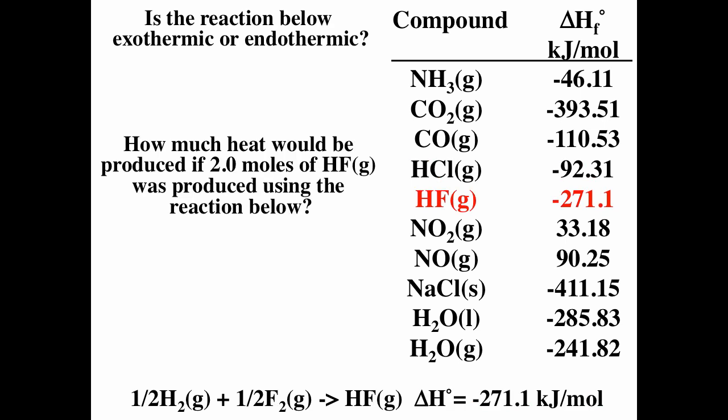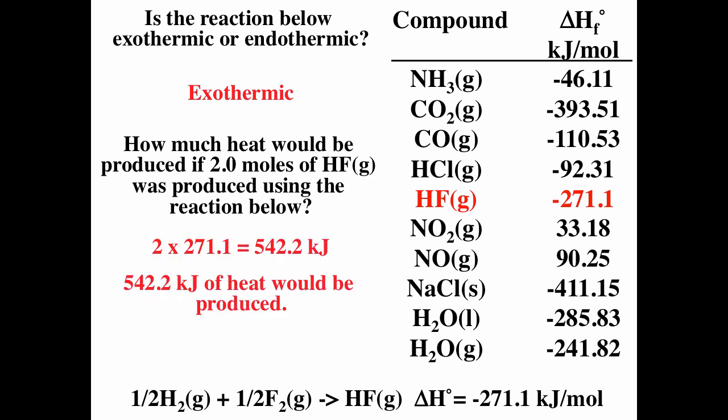For HF, one-half H2 plus one-half F2 forms HF — you must have one mole of the product. The delta H of formation is negative 271 kilojoules, and since delta H is negative, this reaction is exothermic. If two moles of HF were produced, you multiply delta H by two, giving 542.2 kilojoules of heat transferred from the system to the surroundings.